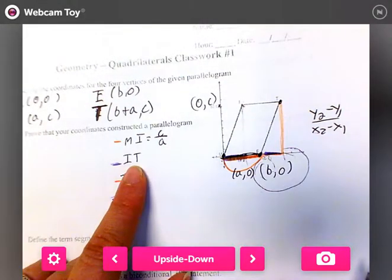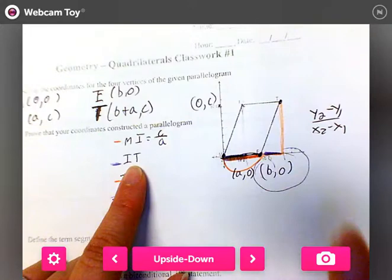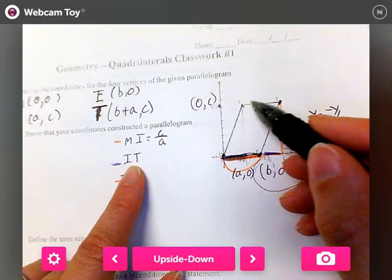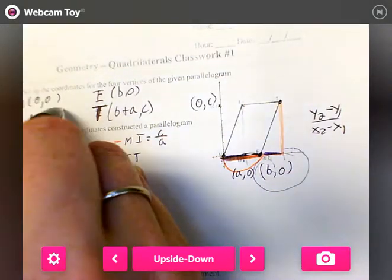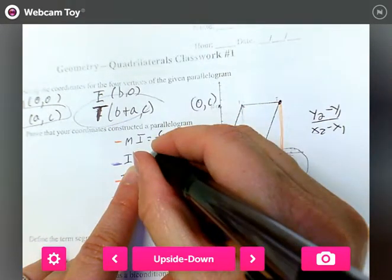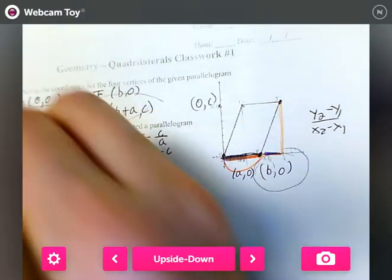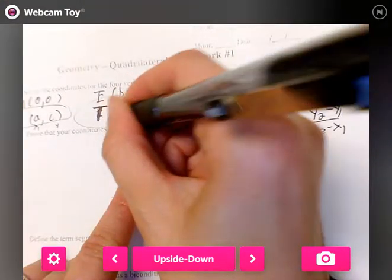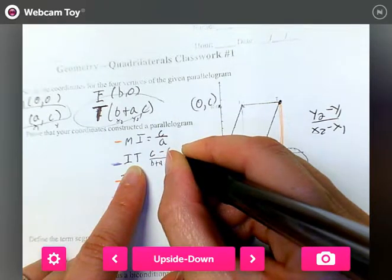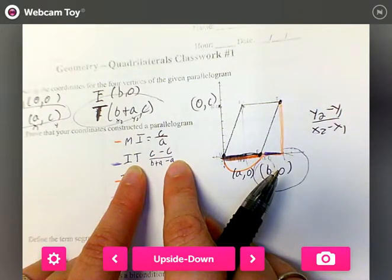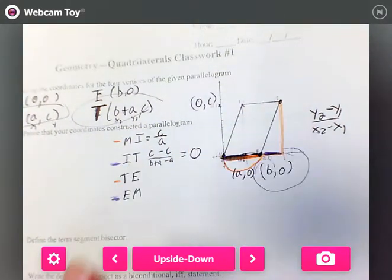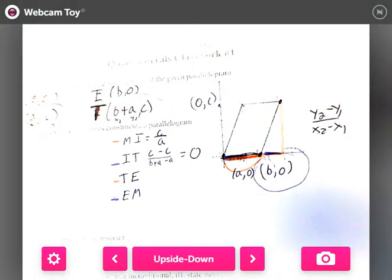Now, I'm going to do the next one. I'm going to do I to T. I'm going to do it using Y2 minus Y1, so you guys can see it. We're going from I to T. So here's I, here's T. I'm just going to put it in that formula. I'm going to say Y2 is C minus C, over B plus A minus A. What's C minus C going to give us? If I have C and I take it away, what am I left with? Zero. So does it matter what's on the bottom? If there's a zero on top of a fraction, it's always just going to be zero.